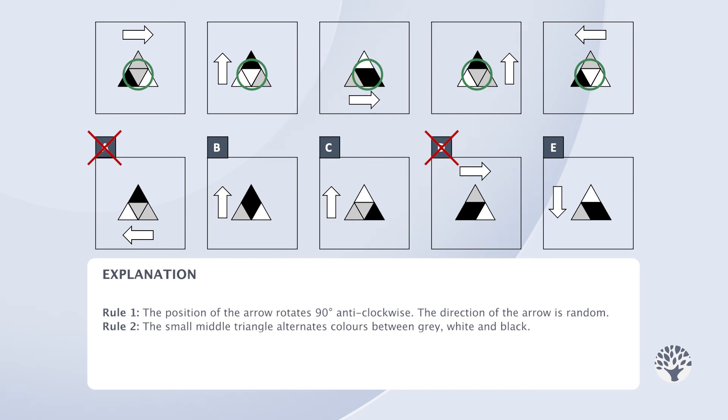This pattern will clearly be followed by black. We can therefore rule out answer option C. Now, we can focus our attention on the three small outer triangles.